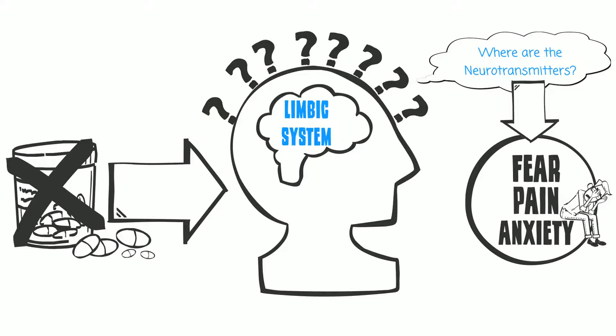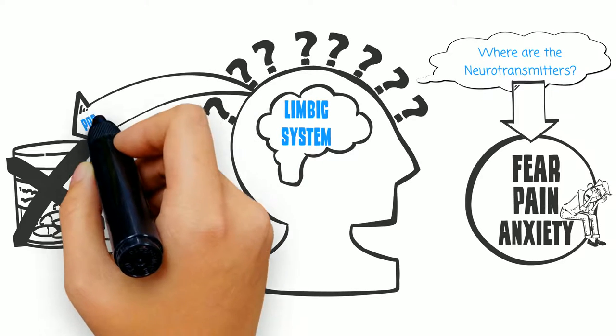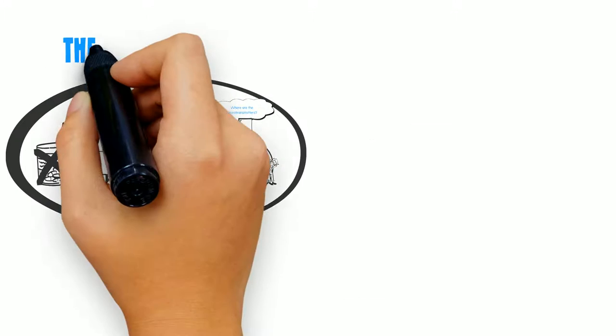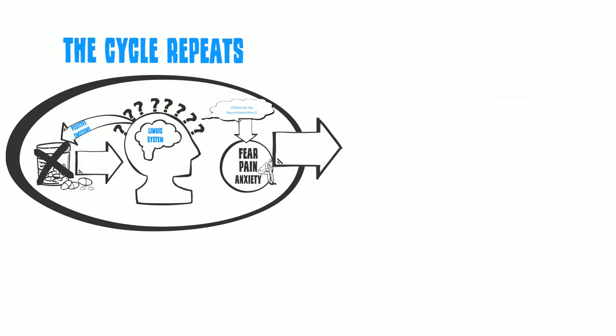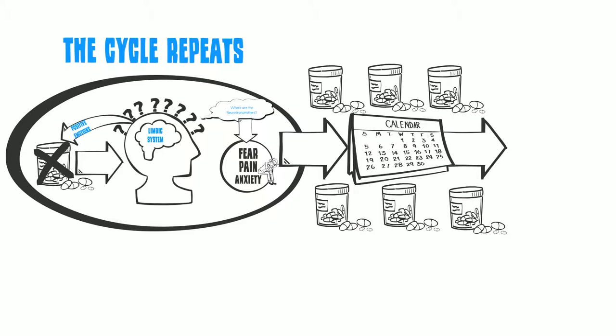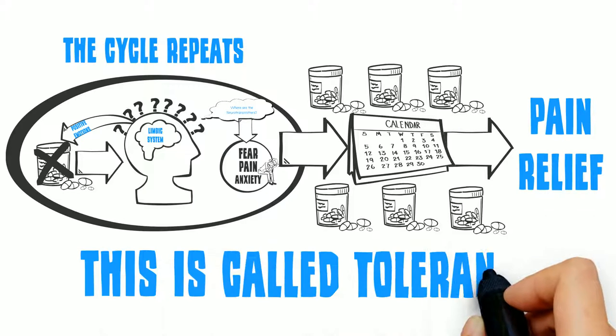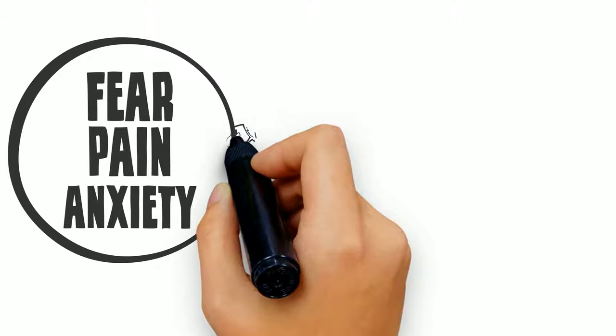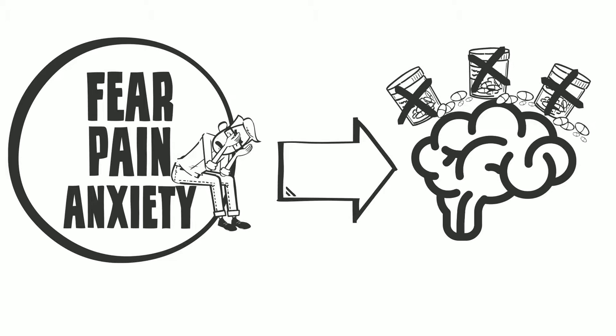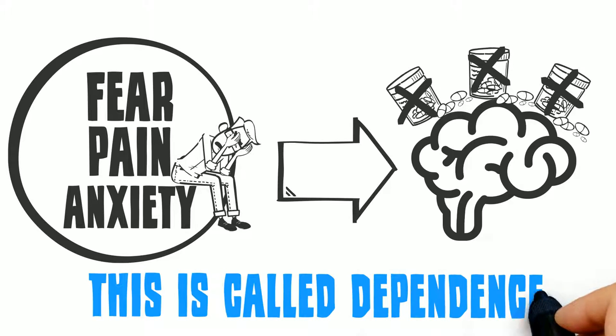No one likes these feelings, so your brain quickly learns to associate pain pills with positive emotions, and the lack of pain pills with negative emotions. Unfortunately, this cycle repeats itself very quickly, and within a few days, it takes more and more pain pills to get relief. This is called tolerance. Also, the negative emotions that occur when there are no pain pill molecules in your brain get worse, and this is called dependence.